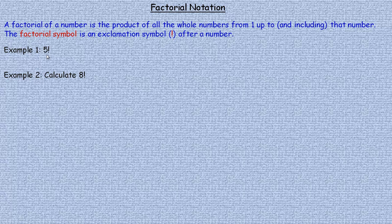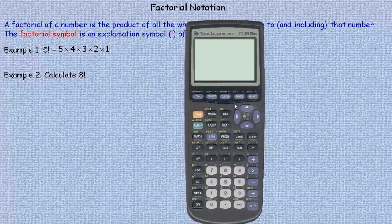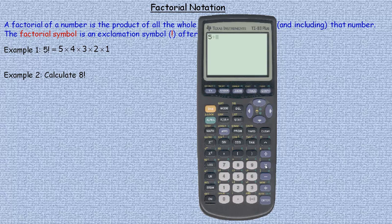In example 1, 5 factorial is asked to be evaluated. So 5 factorial would equal the product of 5 times 4 times 3 times 2 times 1. You could take your calculator and go 5 times 4 times 3 times 2 times 1, and that's 120.